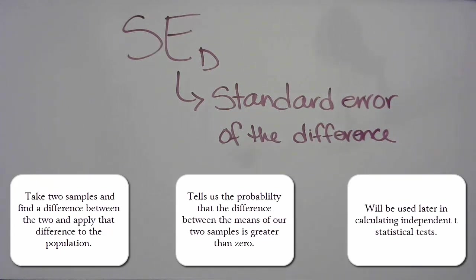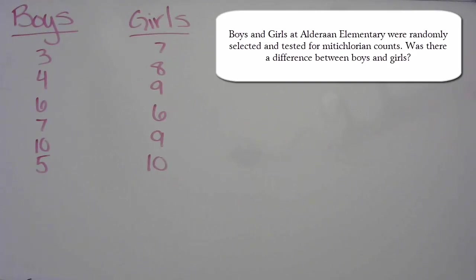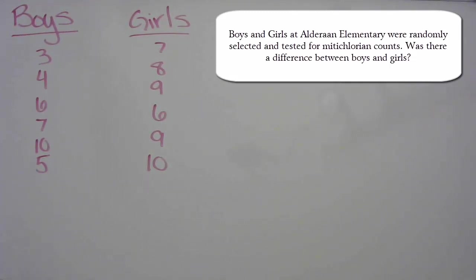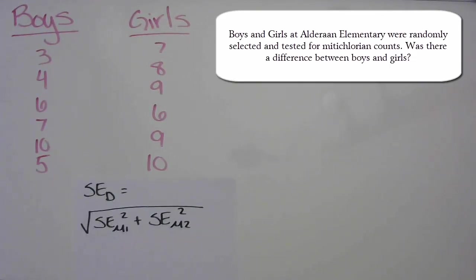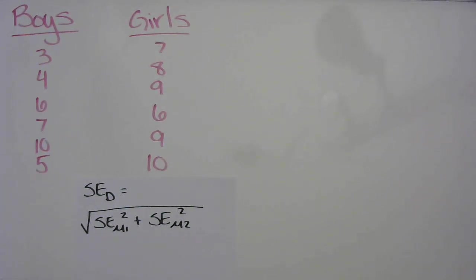Let's get started on an example problem. Boys and girls at Alderan Elementary were randomly selected and tested for midichlorian counts. Was there a difference between the boys and the girls? I've gone ahead and written down the midichlorian counts for boys and for girls, and we are going to be looking for the standard error of the difference. I've also written down the formula that we need.